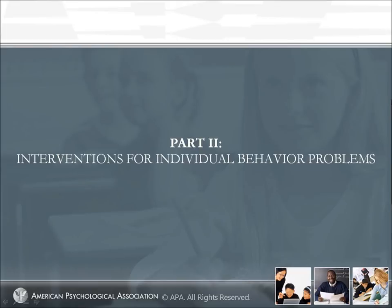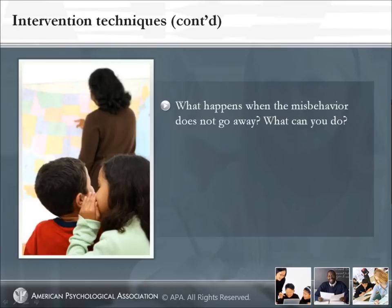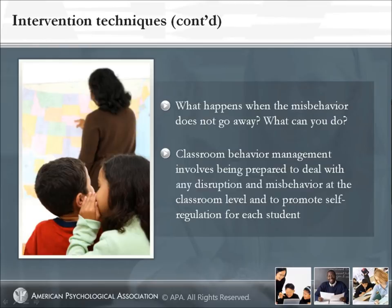Part 2: Interventions for Individual Student Behavior Problems. The first half of this module presented a set of management skills. Now we will discuss some intervention techniques you can use in your classroom. Through appropriate use of physical space, engaging instruction, curriculum matched to student abilities, and setting rules and expectations, you can alleviate a large proportion of classroom misbehavior. When misbehavior does not go away, classroom behavior management involves being prepared to deal with any disruption and promoting self-regulation for each student. We will now discuss teacher attention strategies, functional behavioral assessment, and individual interventions for students exhibiting more consistent or serious behavior problems.